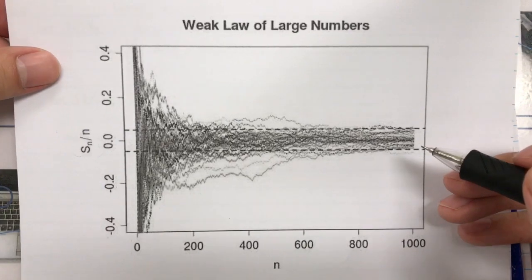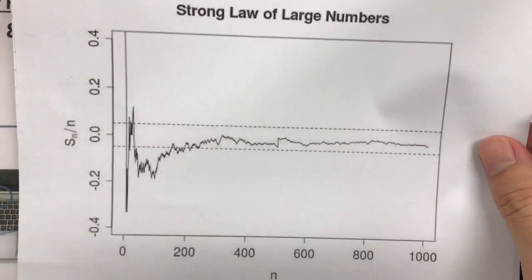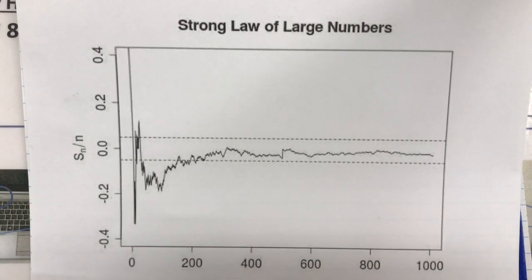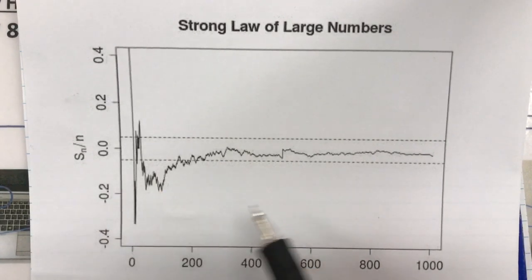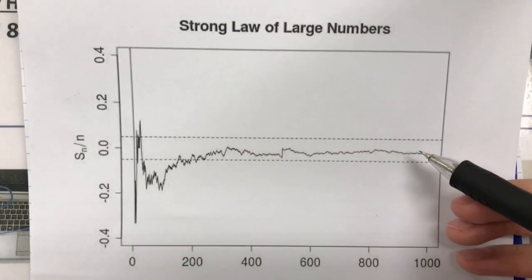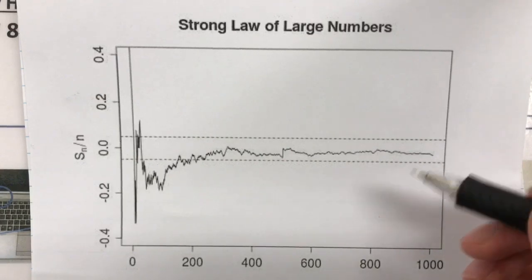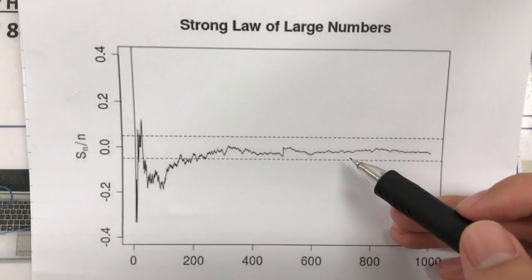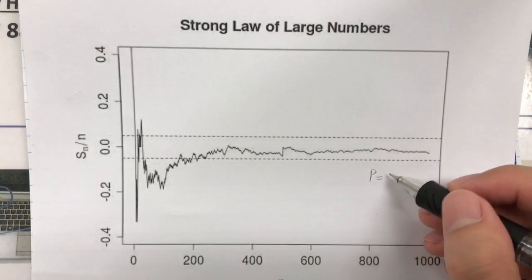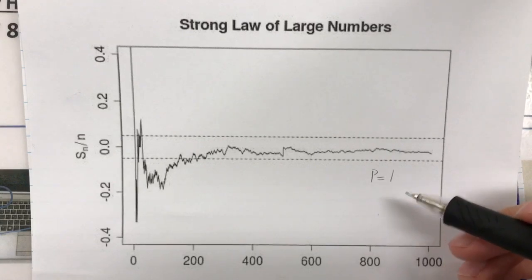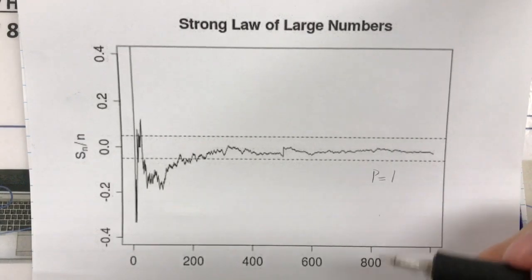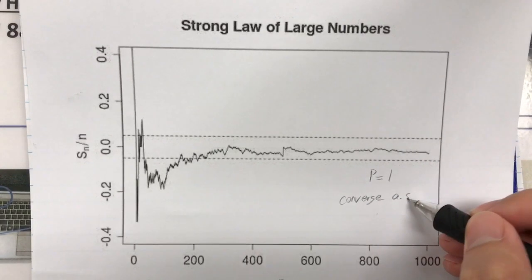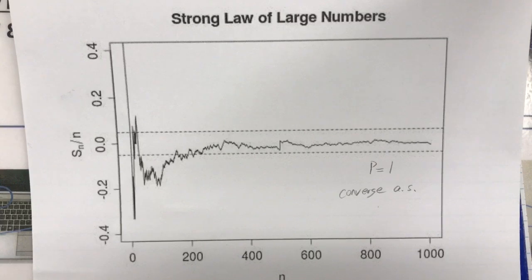However, this is not the case for the Strong Law of Large Numbers. This graph shows just one realization of the random variable S_n over n, but for any realization of this random variable, we can always find an interval such that we can guarantee the probability of the realized value falling within this interval is one. That is why this version is stronger than the previous one — in this case, we say it converges almost surely. Thank you for listening.